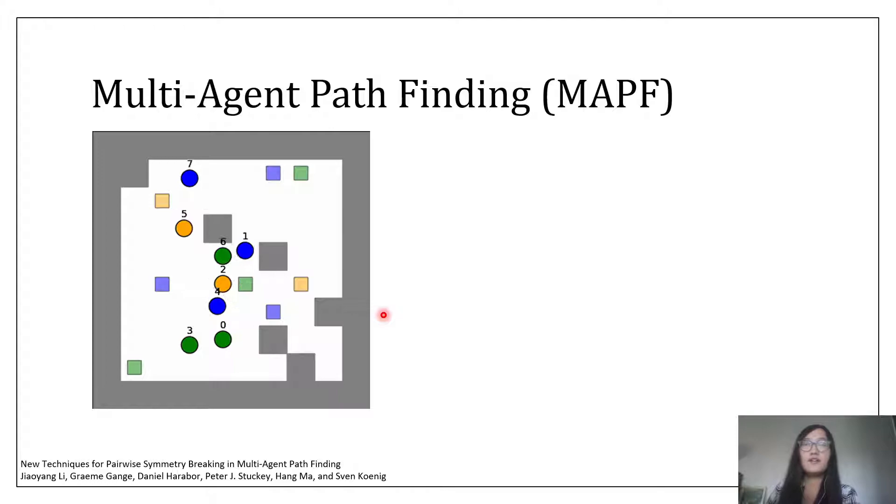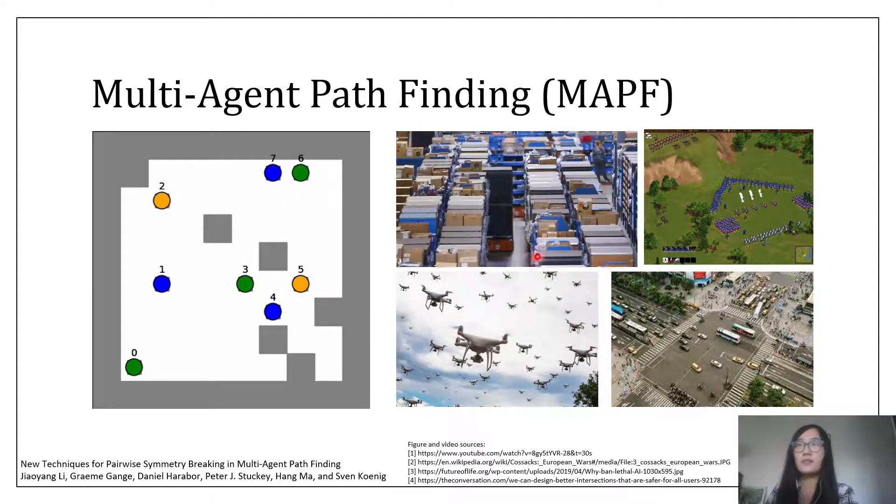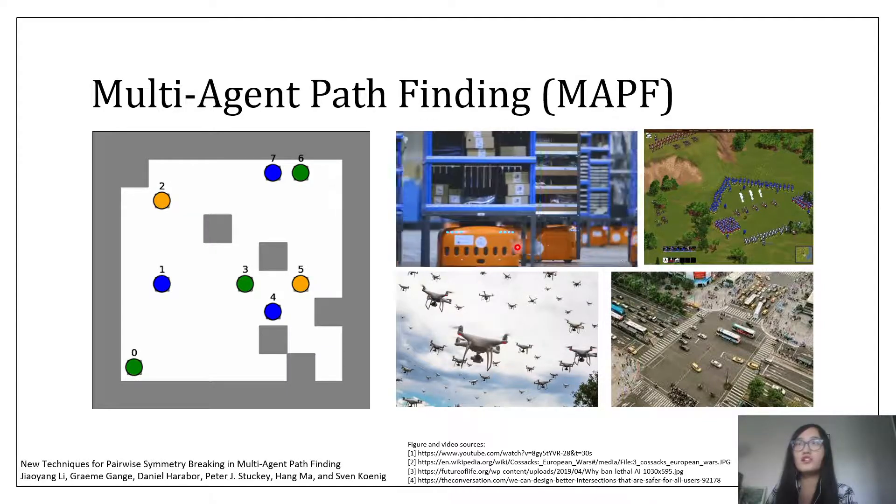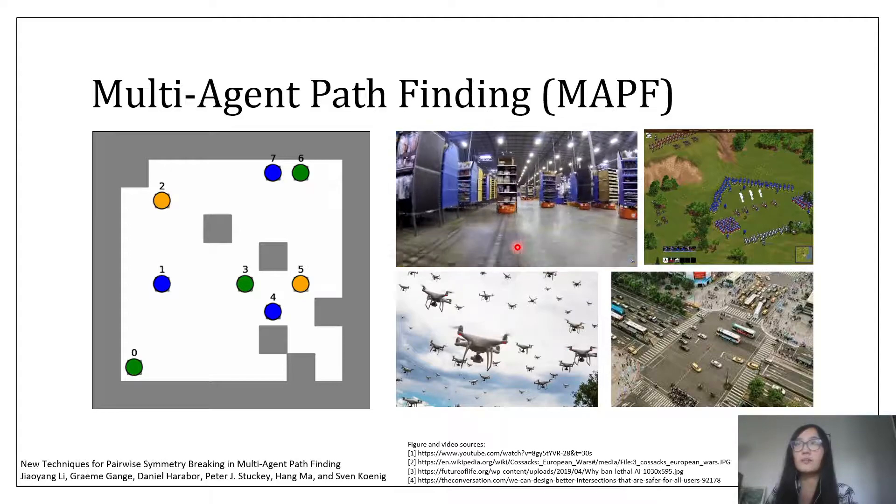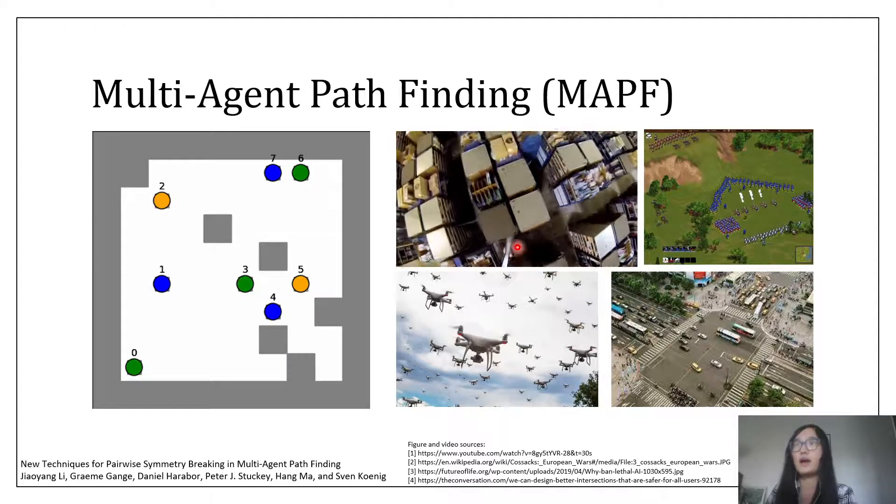Multi-Agent Path Finding, or MAPF, is a problem of finding collision-free paths for a team of agents. It has many real-world applications. For example, in warehouses, people use mobile robots to move shelves between locations. Planning low-cost collision-free paths is important for warehouse throughput.